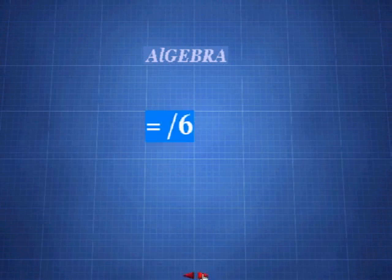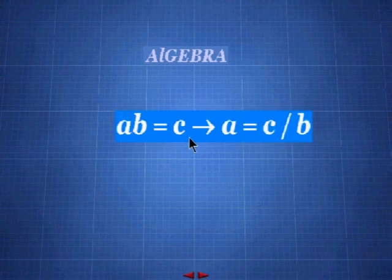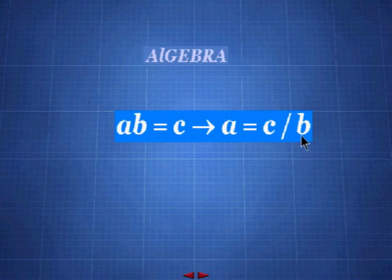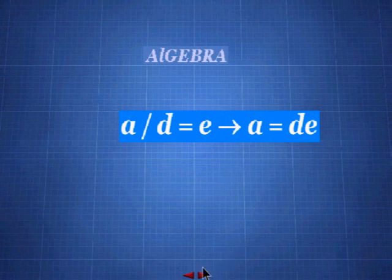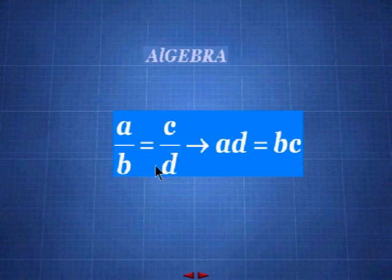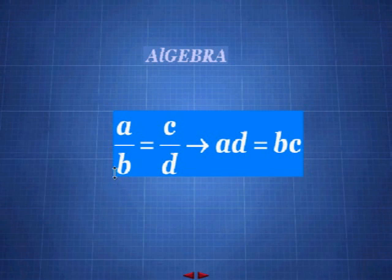For example, if ab = c (meaning a times b), moving b to the other side gives a = c ÷ b. And if a ÷ d = e, moving d to the other side gives a = d × e. When we have a fraction on each side of an equation, we can eliminate the fractions by cross-multiplying: take the denominator of each fraction and multiply it by the numerator of the fraction on the other side.